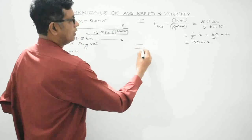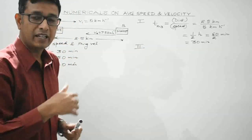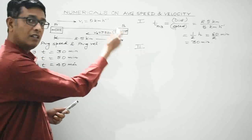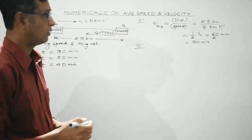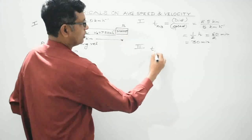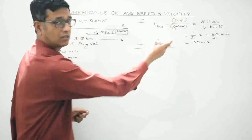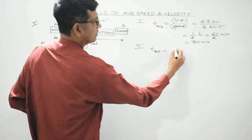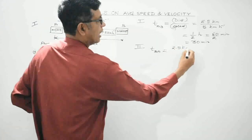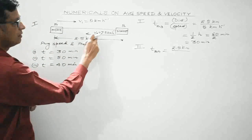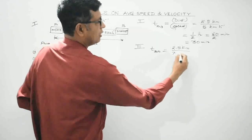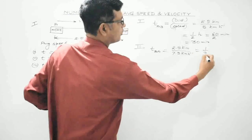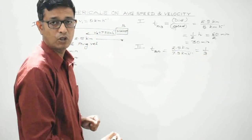The second step is to find the time taken by the person to come back from the market to his home — that is TBA. Using the same formula, distance over speed: 2.5 km divided by 7.5 km per hour gives 1/3 hour.